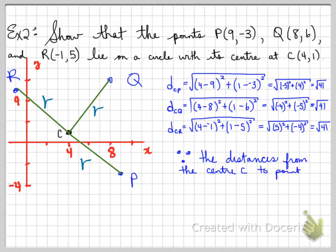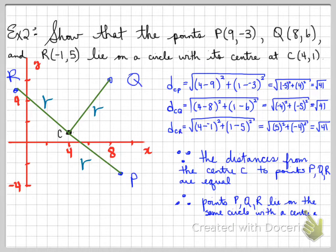Since the distances from the center C to the points P, Q, and R are equal, the points P, Q, R, therefore, must lie on the same circle with the center at C. And notice that P, Q, and R are non-collinear. That means they do not lie on the same line. All right, folks, that's the end of 3.5. That's the end of Chapter 3. Good luck. Have a numerical day. Take care.